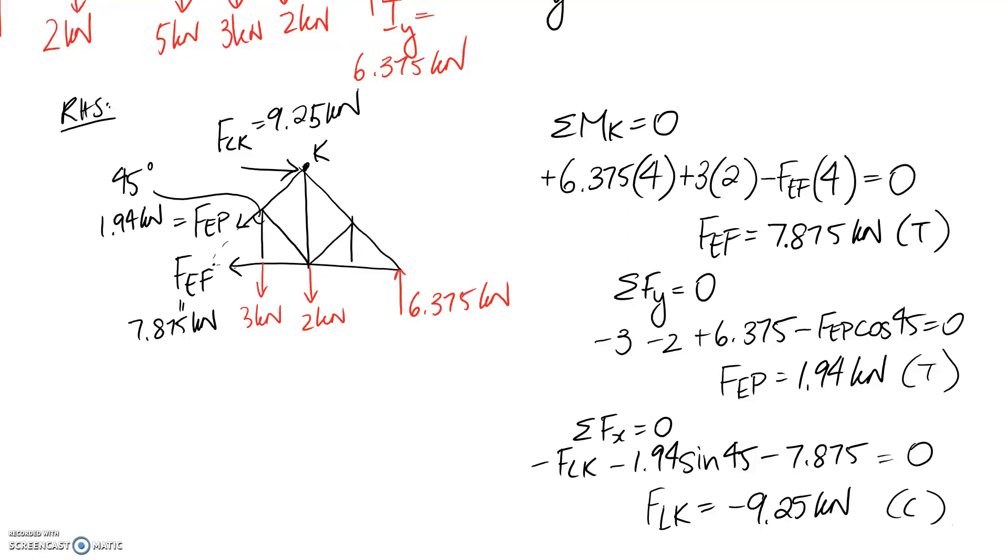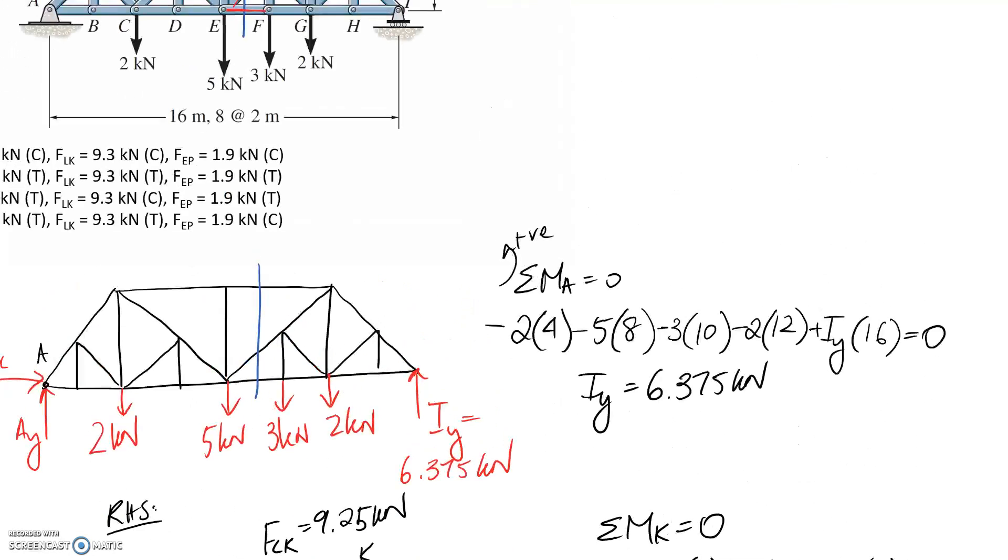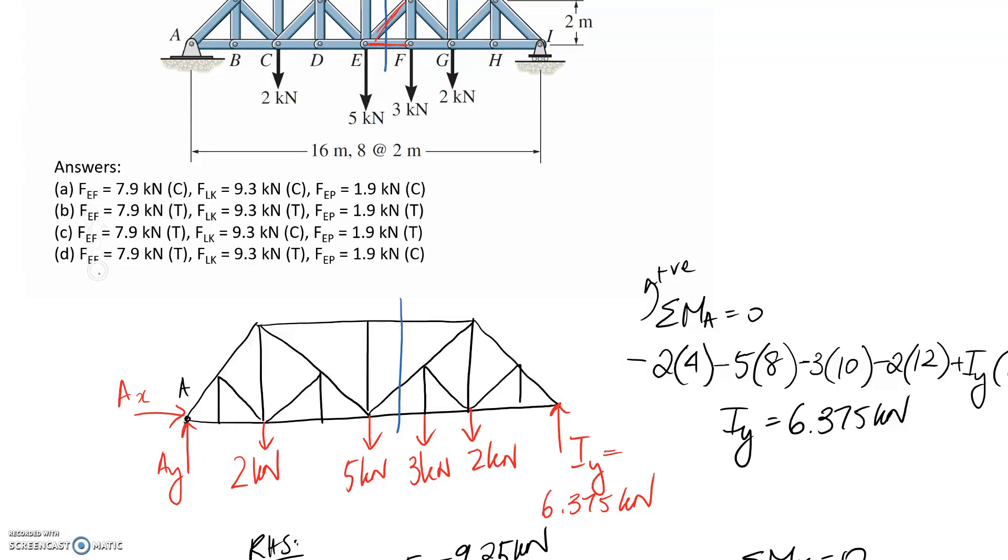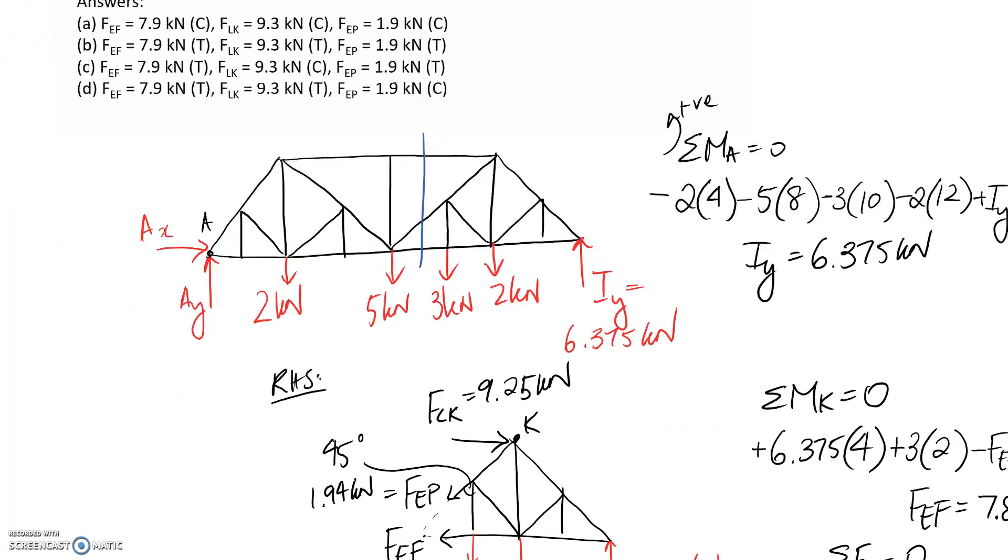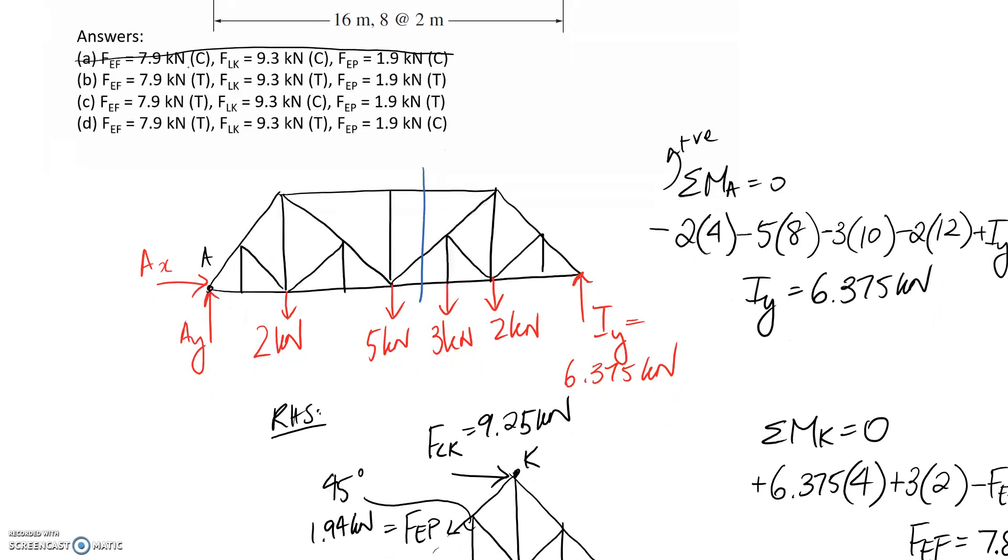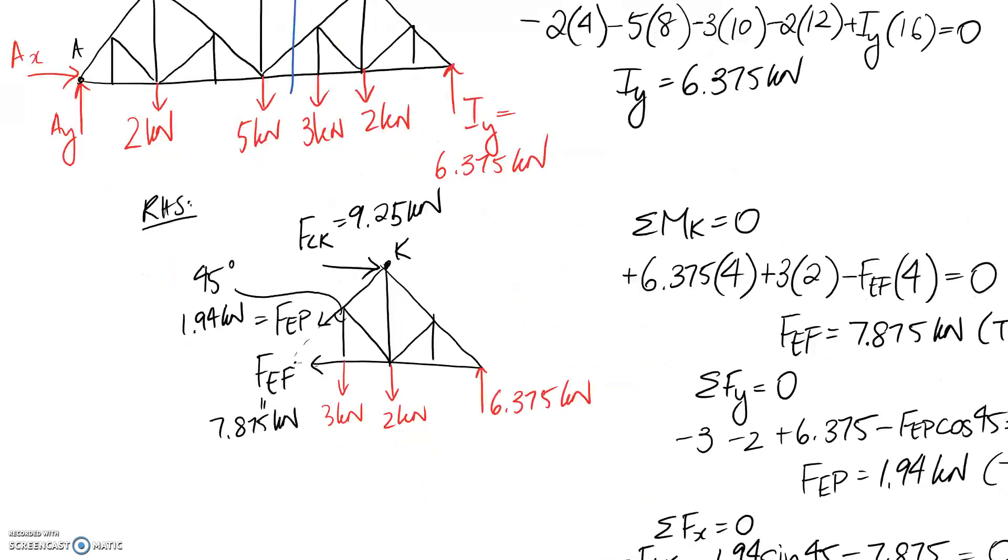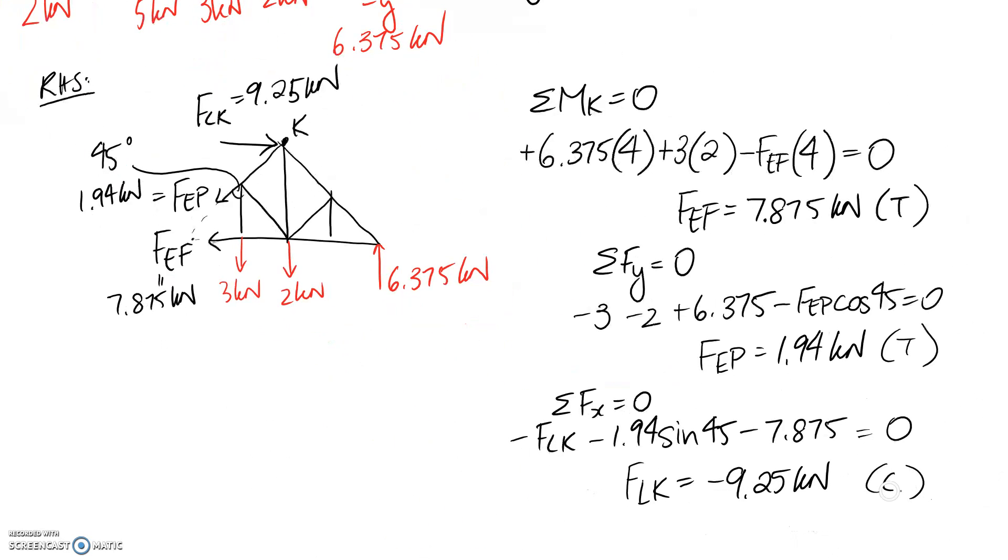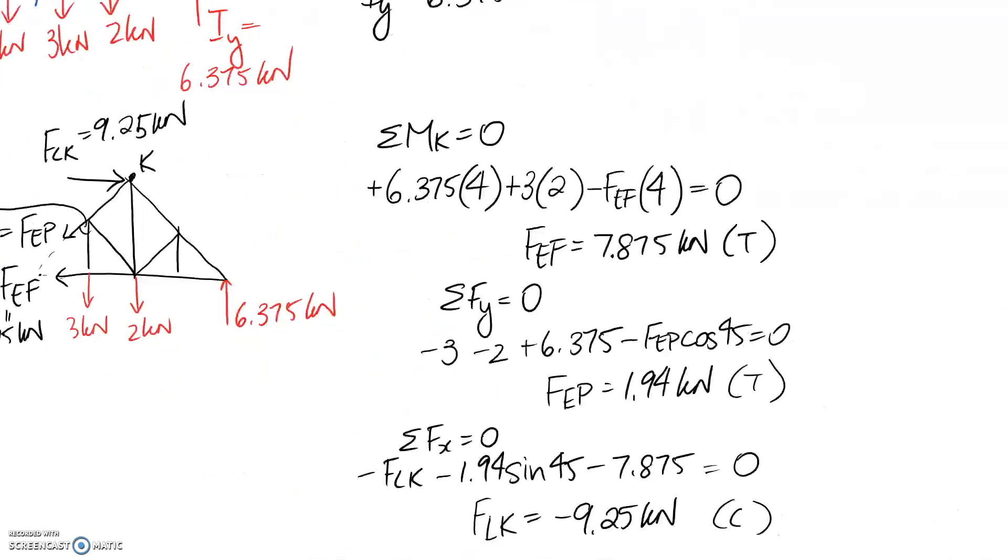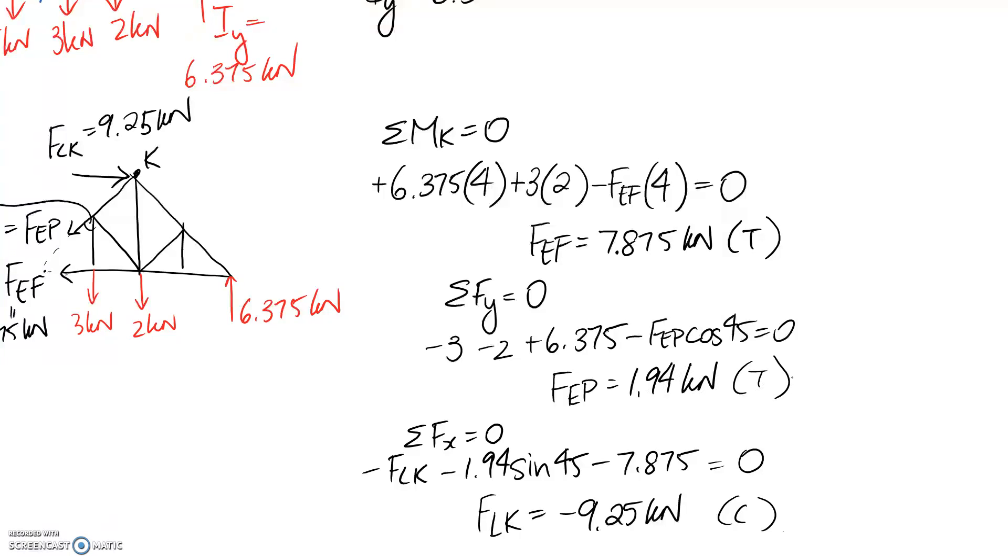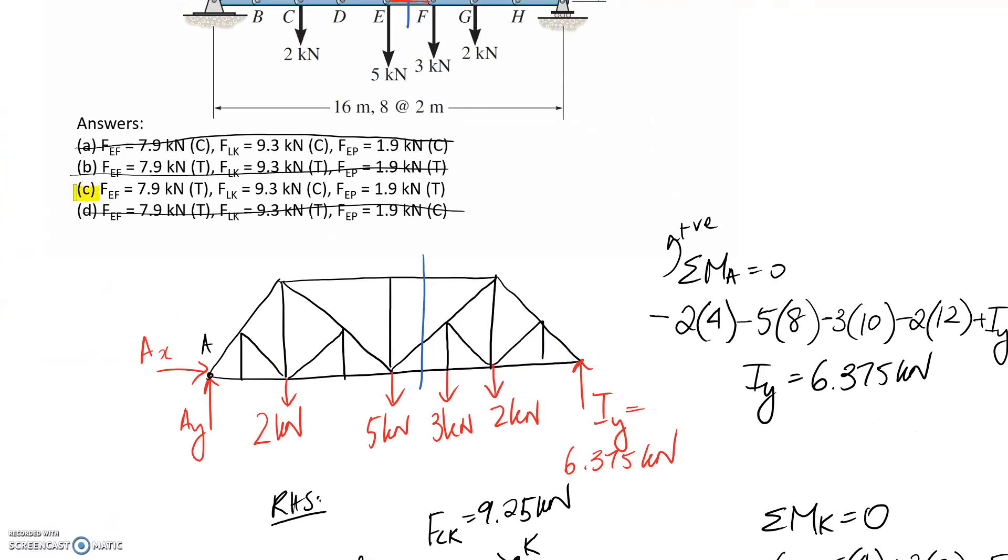Now we're up to the point where we just need to go through and answer the question. We decided that FEF was 7.9, we've got that in tension. So that rules out this first one because that one's in compression. Next up we have FLK, which is 9.25 in compression. Here we've got 9.25, which amounts to 9.3 in compression. These two are in tension, so it can't be them. Then just to double check, FEP is 1.9 kilonewtons in tension. We have that, rounding it, 1.9 kilonewtons tension. So that means that C is the correct answer.